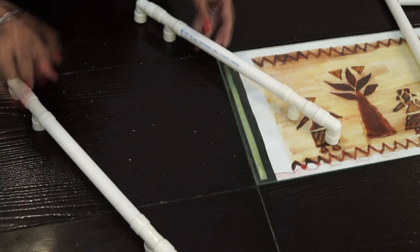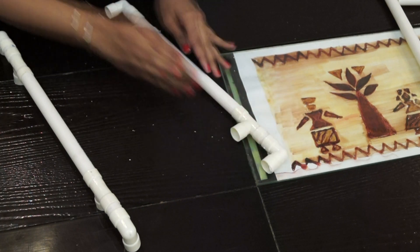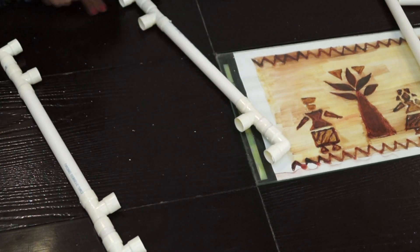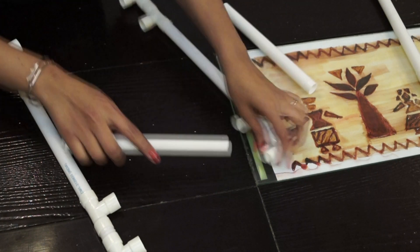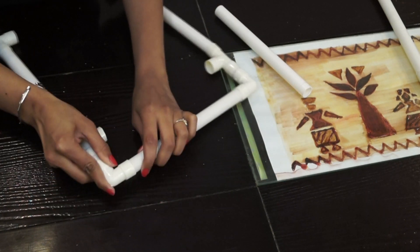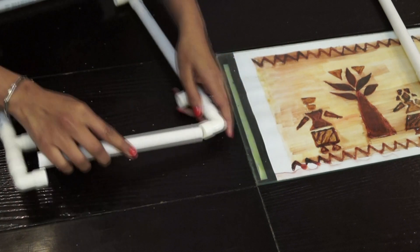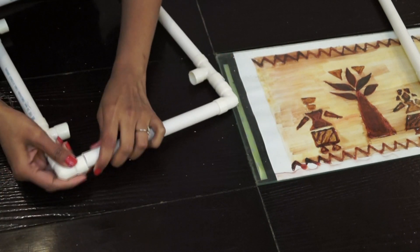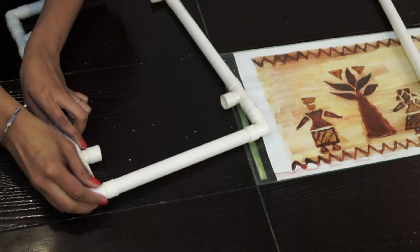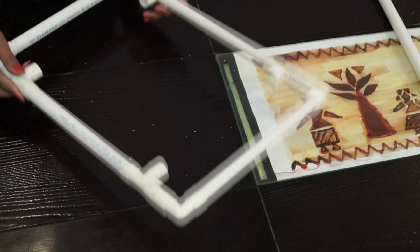So next, we are simply going to attach both these 2 bends with the help of an 8 inch PVC pipe. So for this, we simply need an 8 inch PVC pipe and attach it with both these 2 bends the way I attach them. Take another 8 inch pipe and simply attach it. So this is how we have made the top of the table.